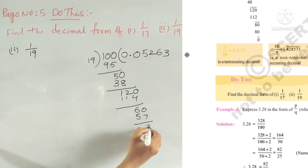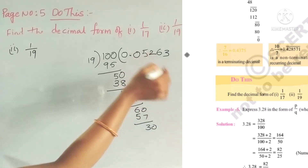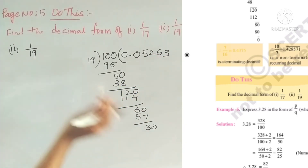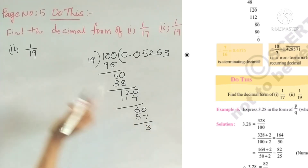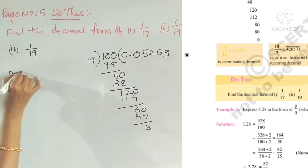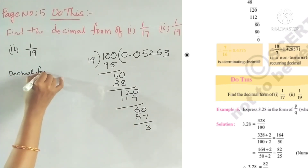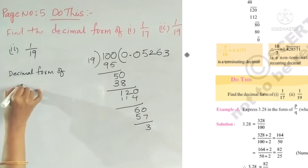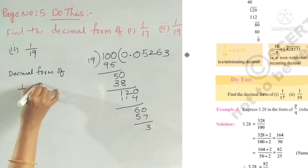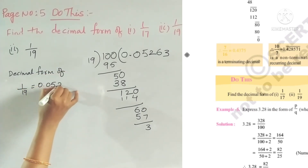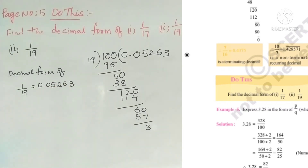That means 19 repeats — it will continue like that. The decimal form of 1 by 19 is equal to 0.05263. Simply divide it. The next problem is to simplify. Thank you for watching. See you in the next video.